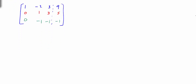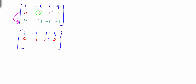Now we move down to the next row. The first row is complete. Looking at the second row, after the 0, we want the first entry to be a 1 — and it's already a 1, so this row is complete. Since we have a 1 here, we want to make everything below it a 0. We can add these rows together: 0 and 0 is 0; 1 and negative 1 is 0; 3 and negative 1 is 2; 5 and negative 1 is 4.